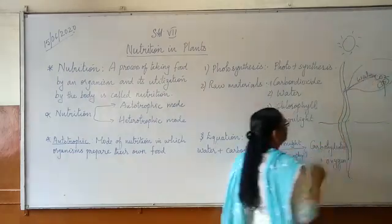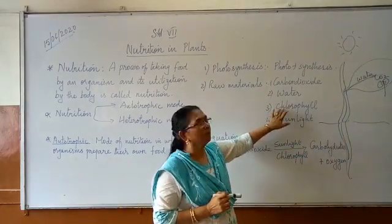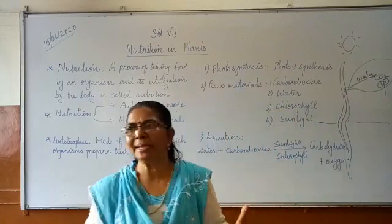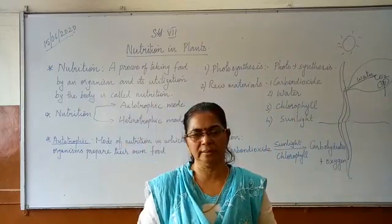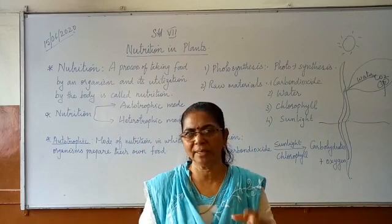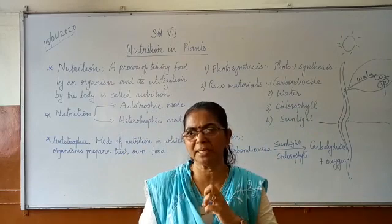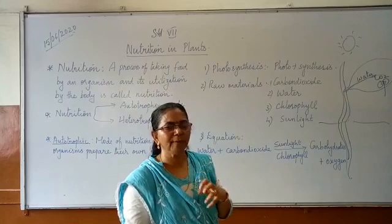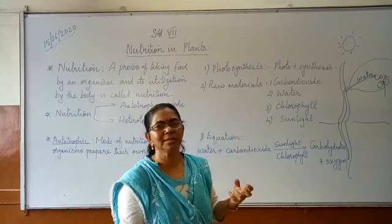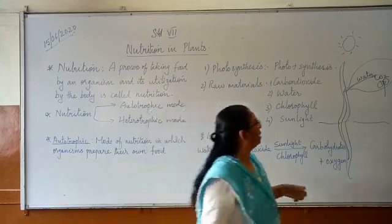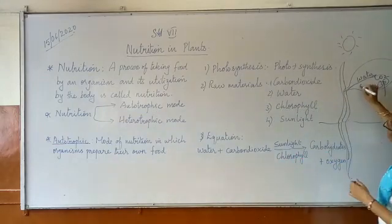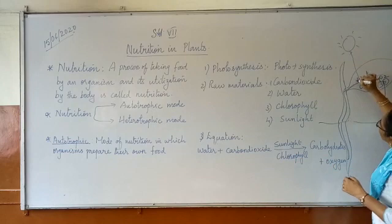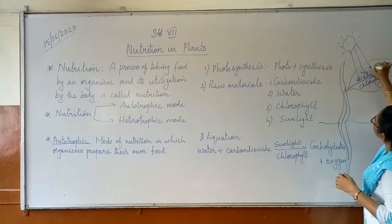Now the third one is chlorophyll. What is meant by chlorophyll? Everybody knows that the leaves are green in colour because of the presence of the green pigment chlorophyll. This chlorophyll is able to capture the sunlight. Since the chlorophyll is present in the leaves, it captures the sunlight which falls on the leaves.